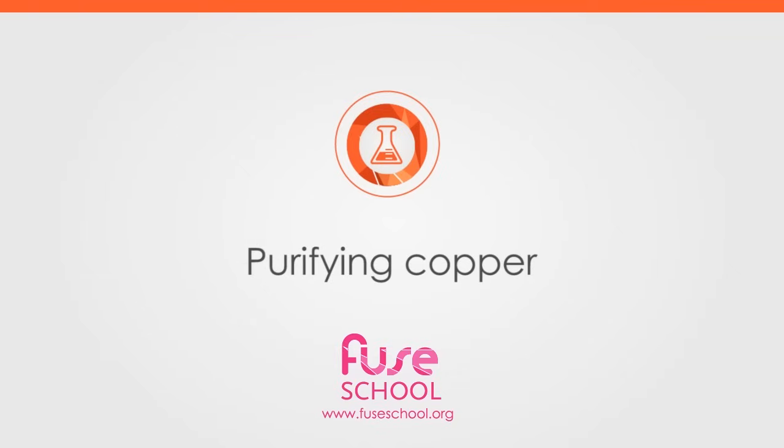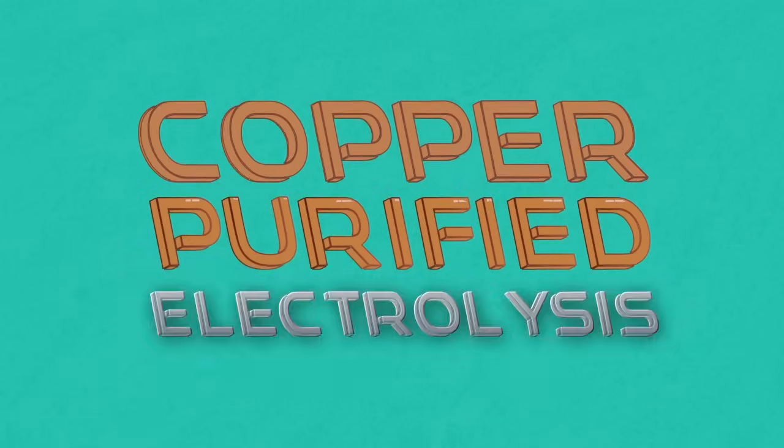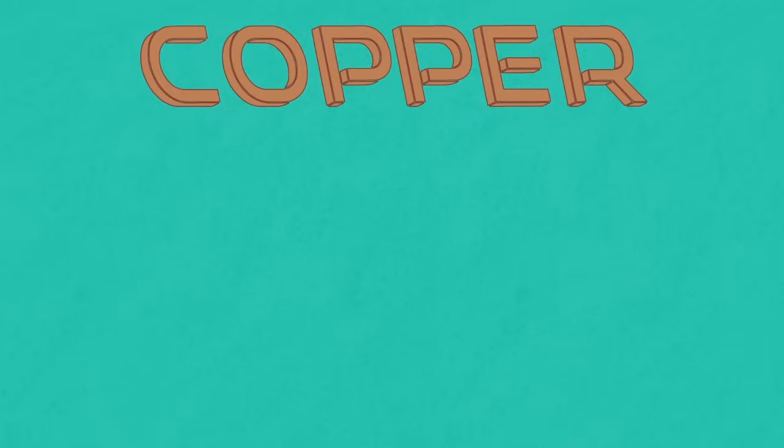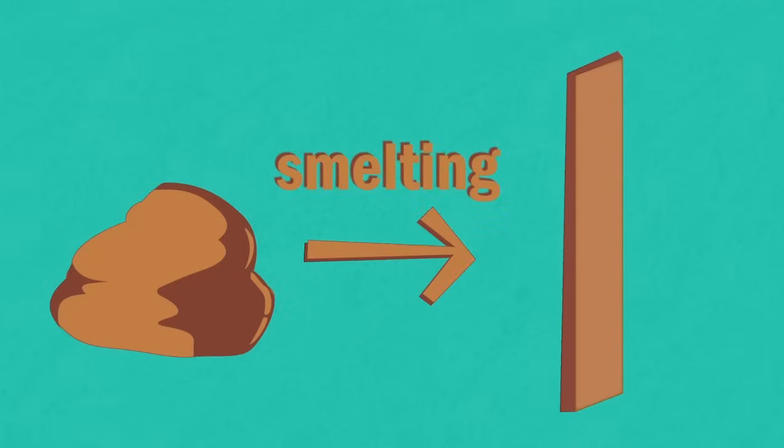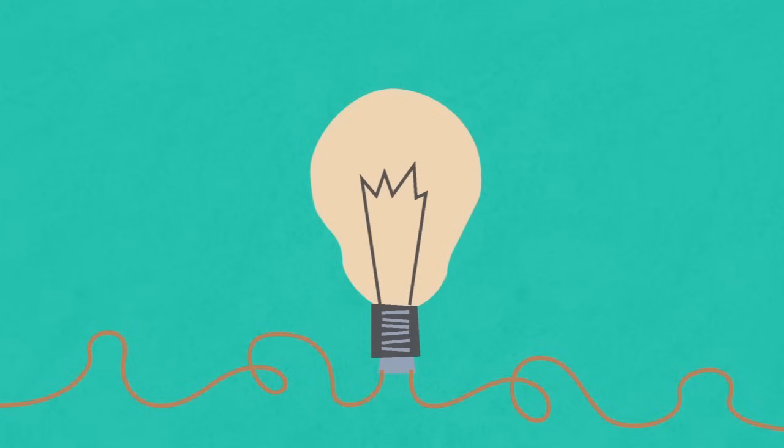In this video we are going to learn how copper is purified using electrolysis. Copper metal is extracted from its ore by smelting but is not pure enough to be used as an electrical conductor. As a result it needs to be purified using the process called electrolysis.